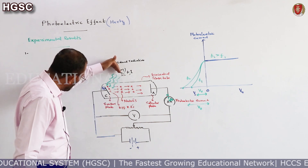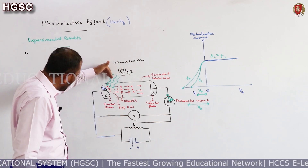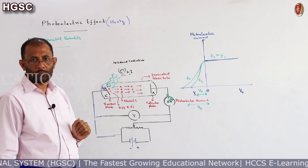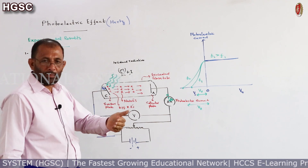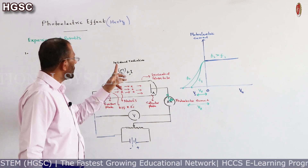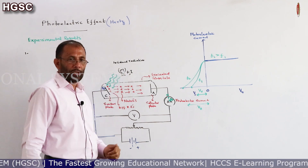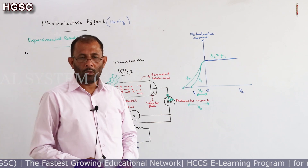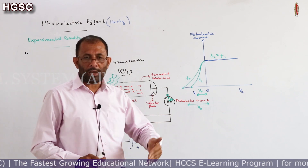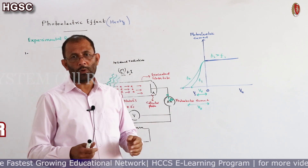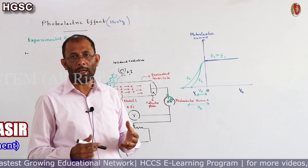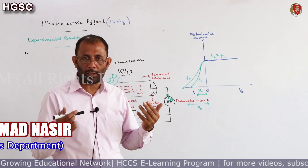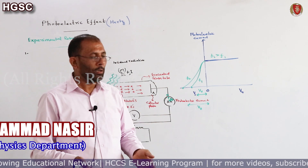You can increase the intensity of the source as much as possible — if the frequency F is less than the threshold frequency F0, then photoelectric emission will not be possible. Photoelectric effect will not be possible.